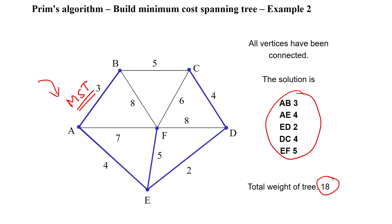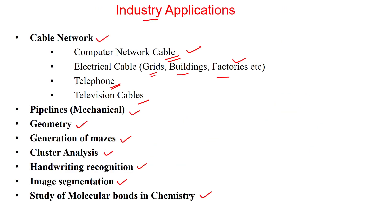Based on Prim's algorithm, you need 18 units of cable to establish the network between these 6 cities. Thanks for watching.